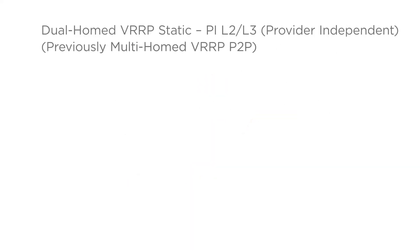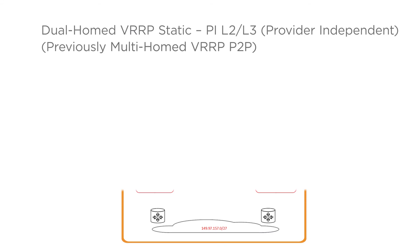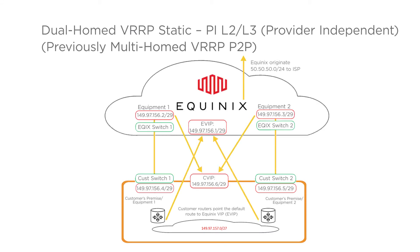Dual-homed VRP static, PI — layer 2/layer 3, provider-independent — previously called multi-homed VRP point-to-point. This is similar to the previous example, except here the customer wants to use their own subnet and does not want to run BGP. Equinix originates the prefix subnet. The customer's own subnet has to be greater than or equal to /24. The diagram uses the customer's /24 for the routed subnet, with the point-to-point assigned free of charge. The customer gets /29 by default, free of charge.